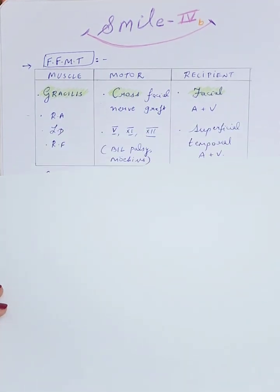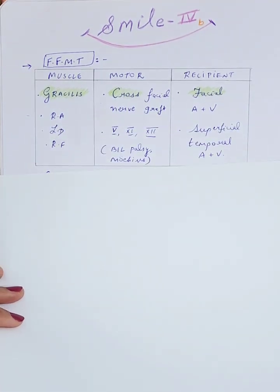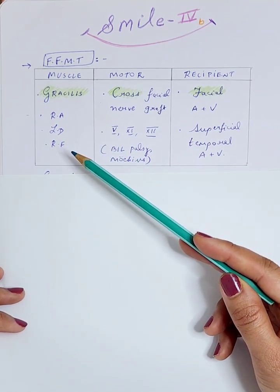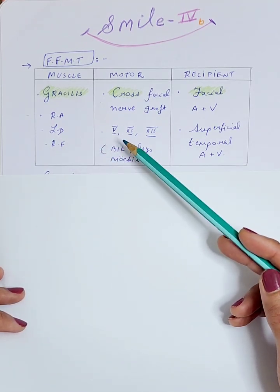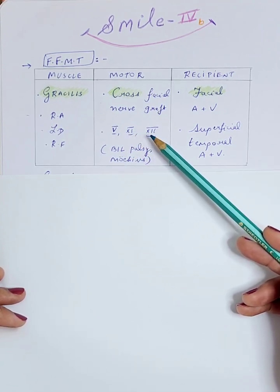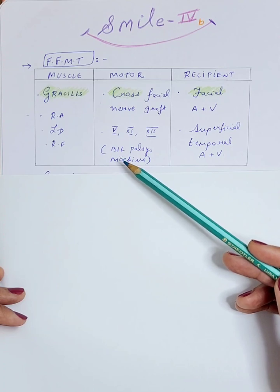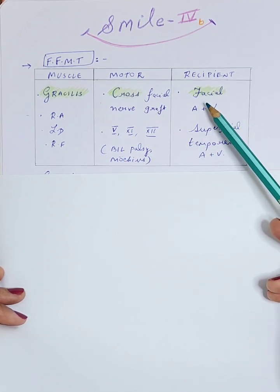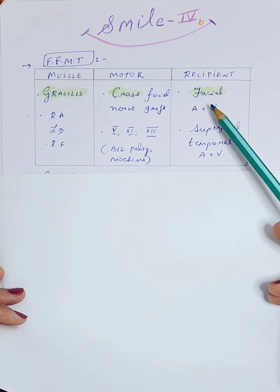The most popular vessels that we have are the facial artery and vein. Apart from that, we have the rectus abdominis muscle, the latissimus dorsi, the rectus femoris for muscle options. The nerve to masseter, spinal accessory, hypoglossal nerve as the motor input, especially in cases of bilateral palsy or Mobius syndrome. For recipient vessels, if the facial vasculature is not available, we can use the superficial temporal artery and vein.